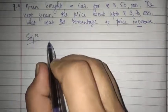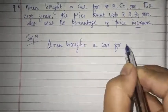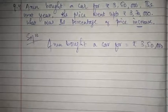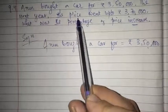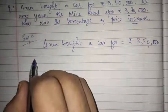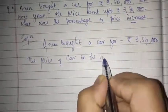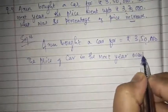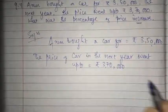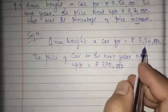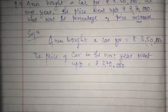Arun bought a car for rupees 3 lakh 50,000. In the next year the price went up to rupees 3 lakh 70,000. So the earlier price was 3 lakh 50,000 and in the next year the price increased to 3 lakh 70,000.